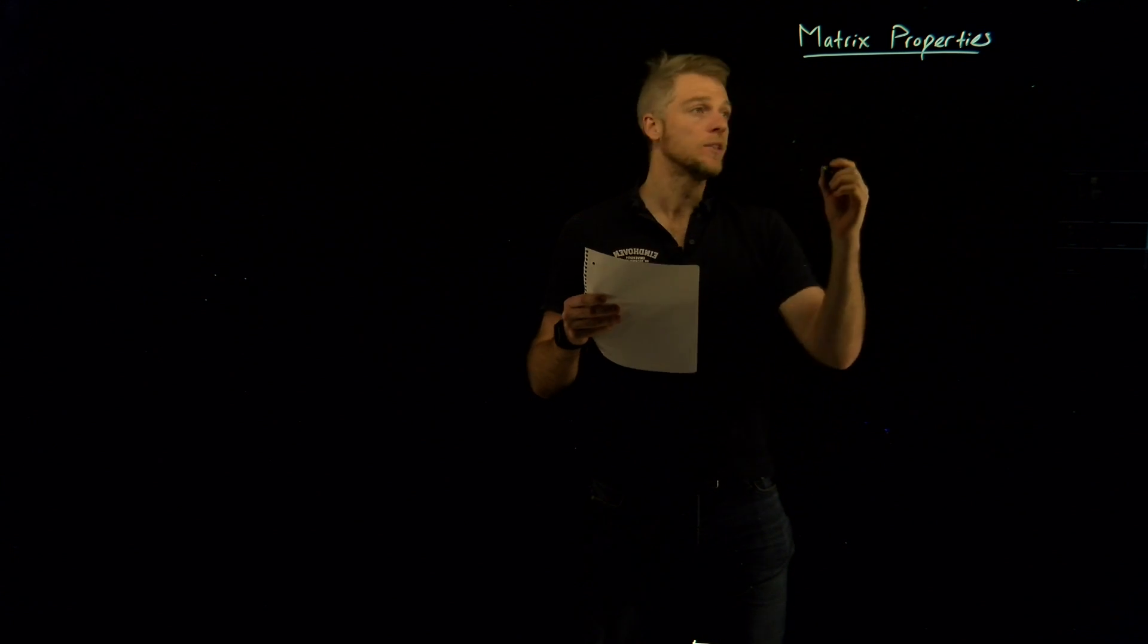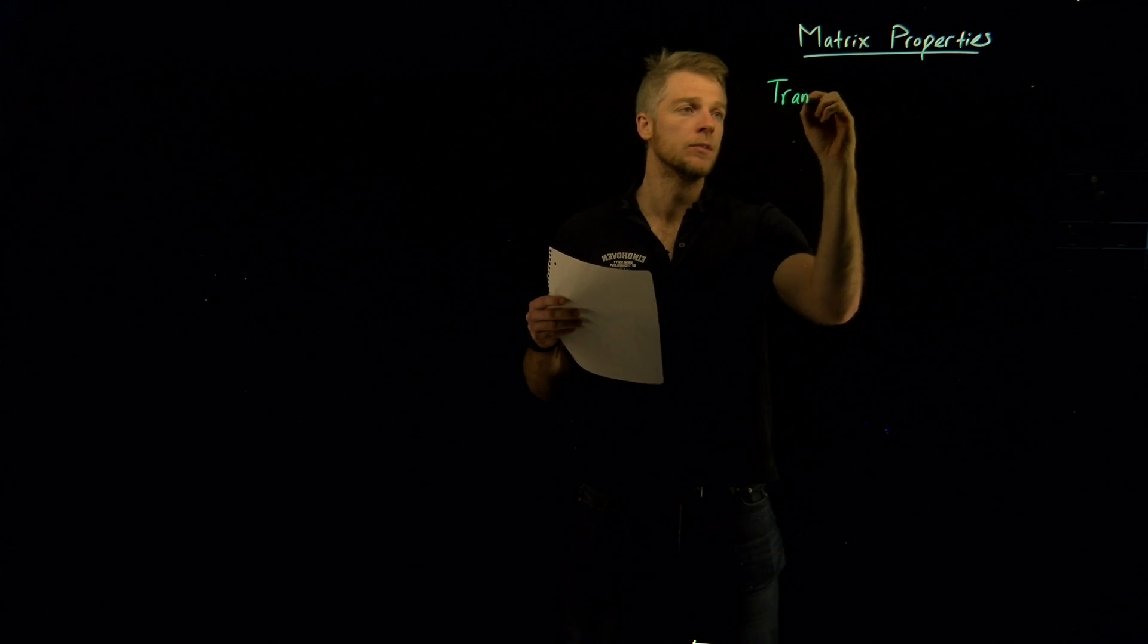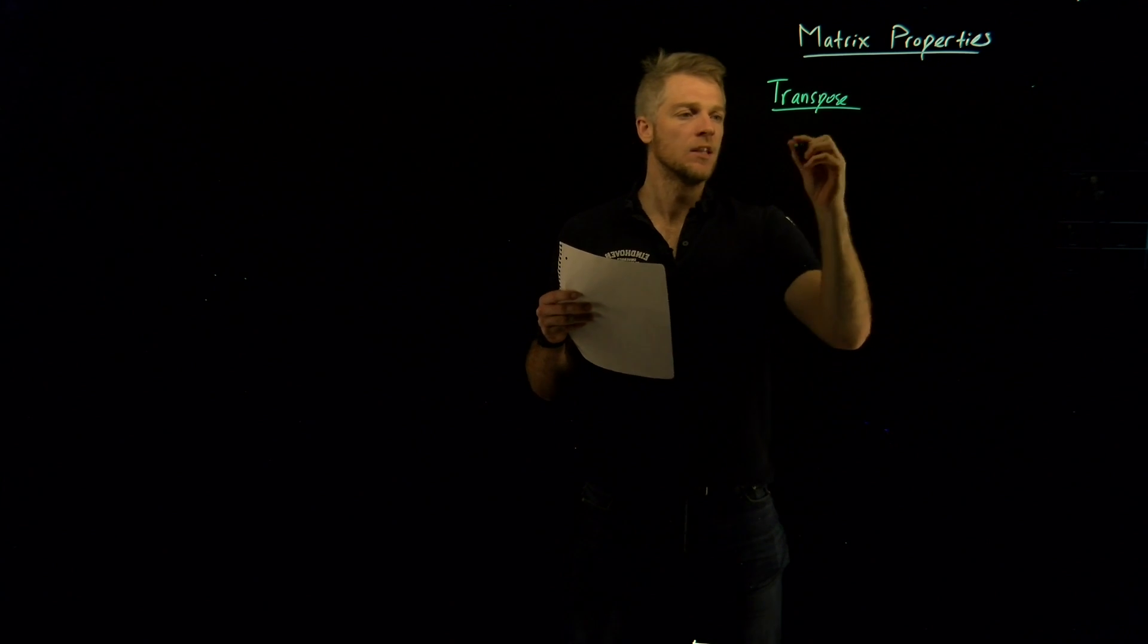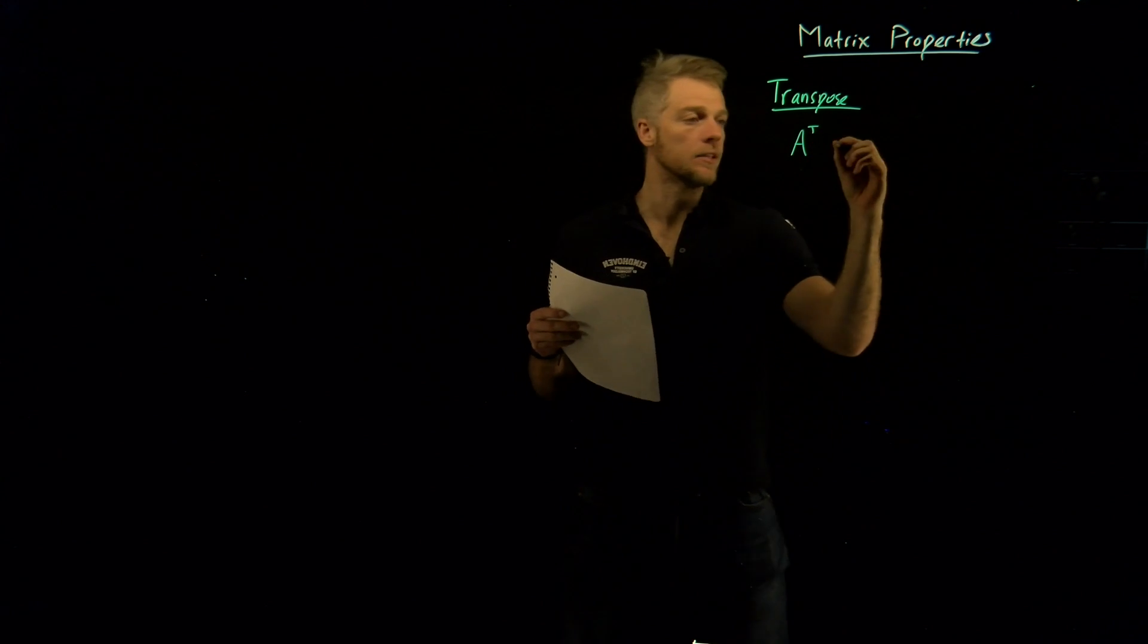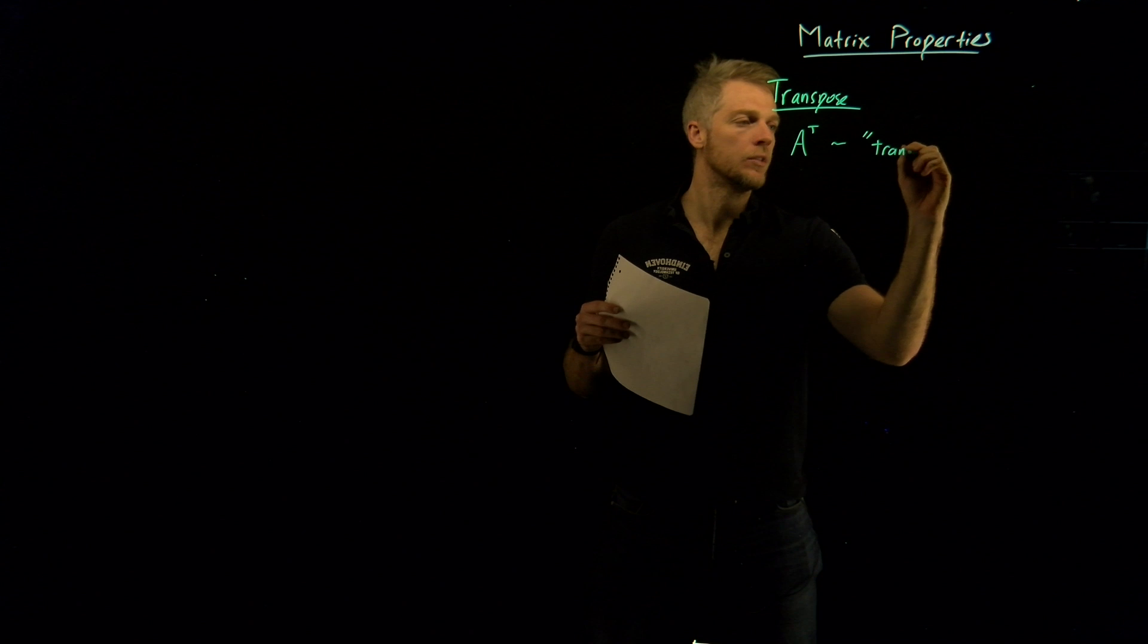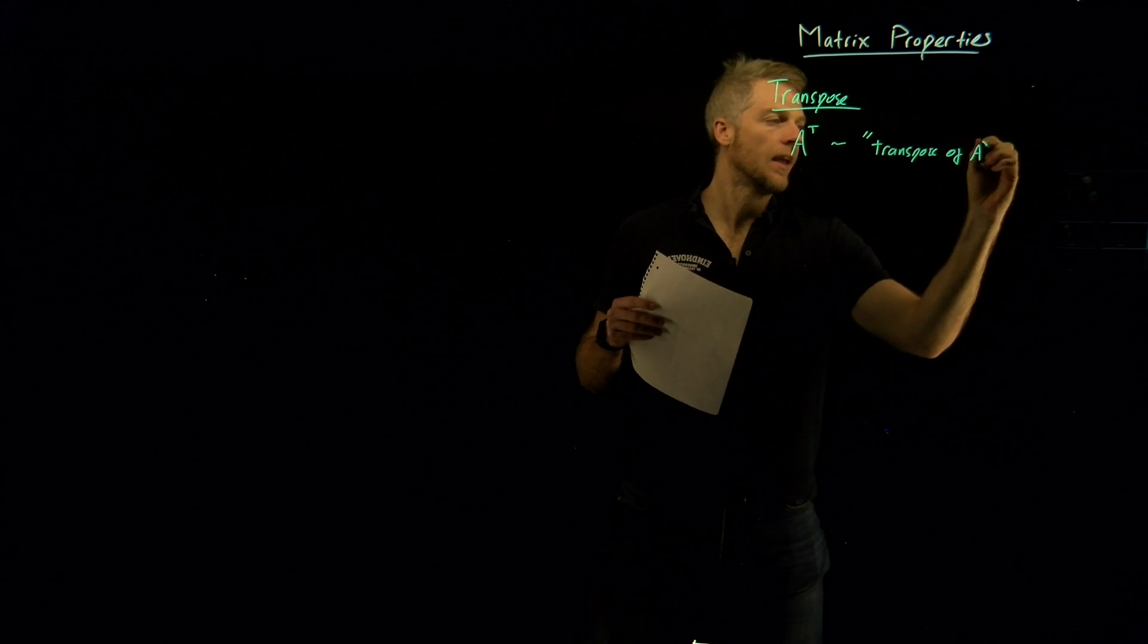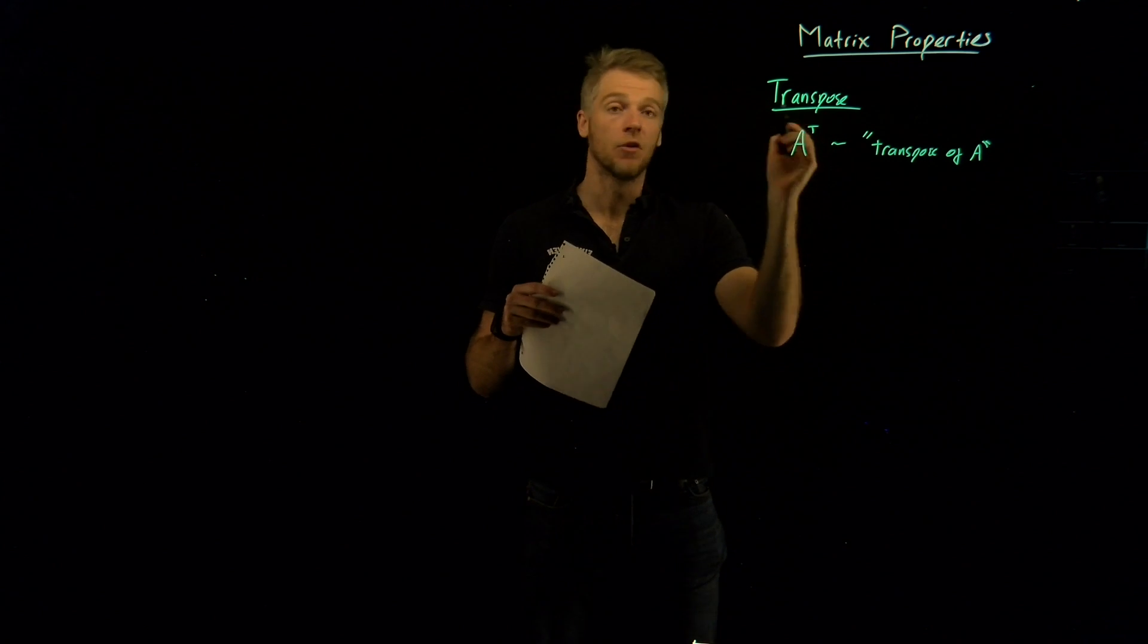I'm going to begin with something quite simple, something you've probably already seen before. We're going to be talking about the transpose of a matrix. And the transpose is written with a capital T above it like this. So this A T here stands for the transpose of your matrix A.